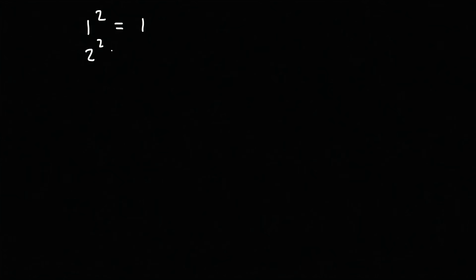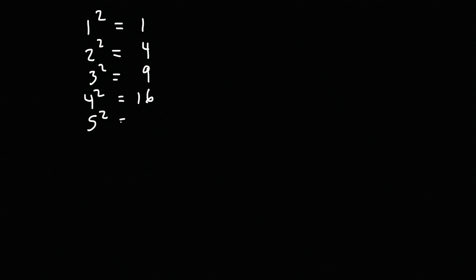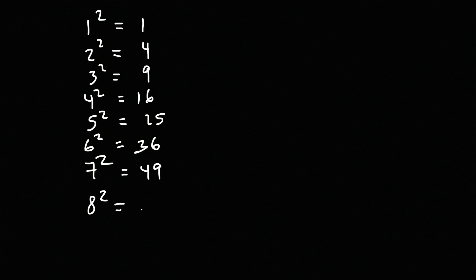First we need to talk about the patterns of perfect squares. As I write these down, notice what you see. 1 squared is 1, 2 squared is 4, 3 squared is 9, 4 squared is 16, 5 squared is 25, 6 squared is 36, 7 squared is 49, 8 squared is 64, 9 squared is 81, 10 squared is 100.